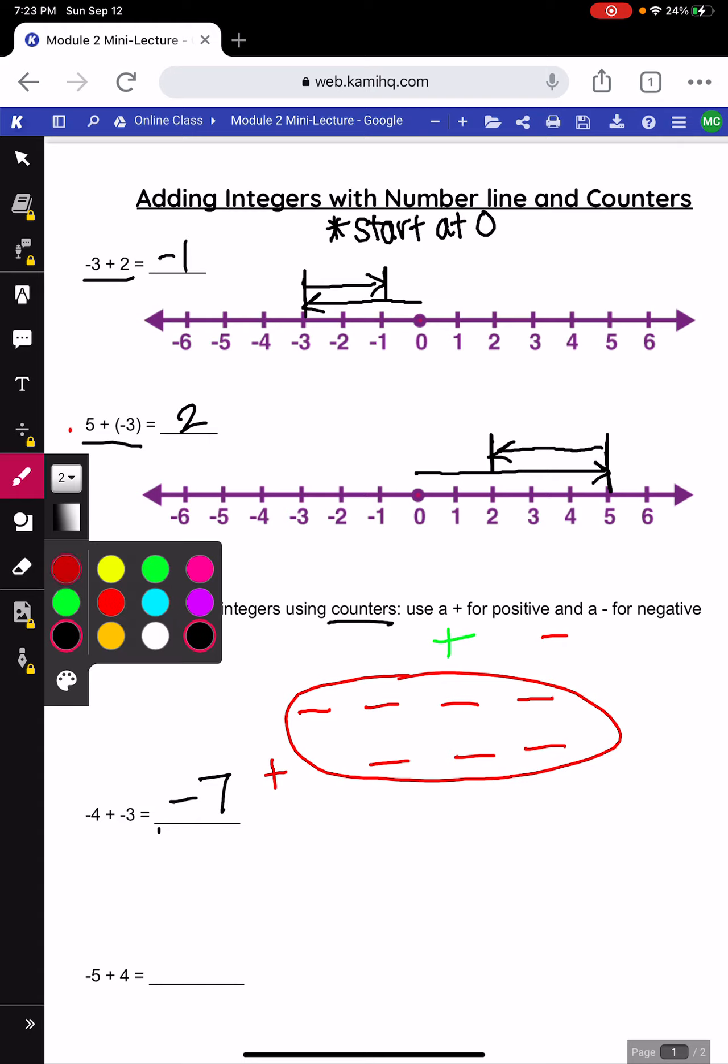Alright, to the next one I am again going to start with 5 negatives and this time I'm adding 4 positives. Now, before we find our answer I want to look at 1 pair here.